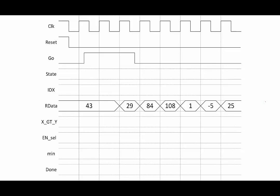So let's look at an example timing diagram to get a sense of how the control interacts with the circuit. At the very beginning, reset is one, so this puts us into the wait state and resets our finite state machine. We are also going to reset our minimum value to zero during this state. We see that go goes high on this clock signal, so we remain in the wait state for one period, and then we enter our initialization and go through each of our comparison states one at a time. Once we know our states, we know what our index value is going to be based on each state — so they will mirror our states.